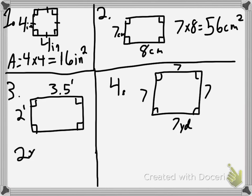3, 2 times 3.5, and that gives us 7. And that little dash up there, the little apostrophe means feet, so it's feet squared.